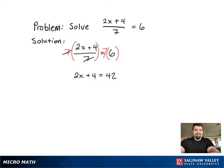So to get the x term by itself, we're going to subtract 4 from both sides. Now, to get the x by itself, all we have to do is divide by 2. And thus, x equals 19 is the final answer.